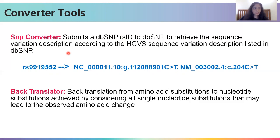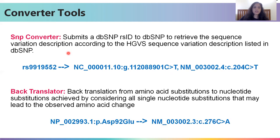The third converter tool is the back translator, which, as the name suggests, helps you convert an NP ID back into the predicted NM ID.